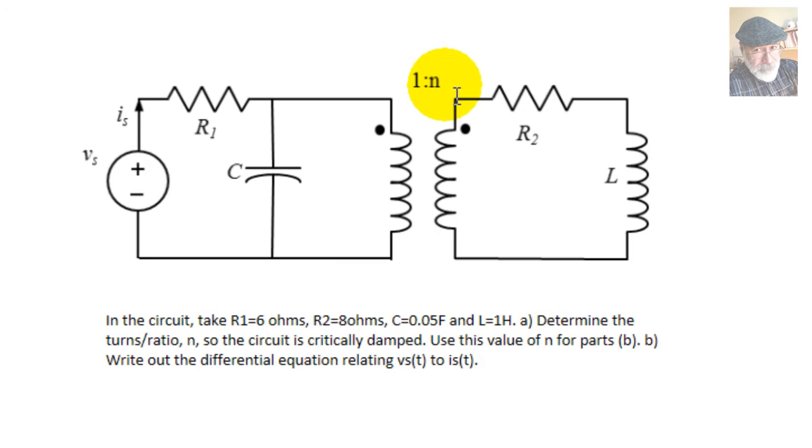Determine what should be the ratio of this ideal transformer N for the circuit to be critically damped. Maybe it's impossible. Maybe there is not a realistic N for that. But we need what should be the value of N for that to be the case. I will not even look at part B. Concentrate only on part A.